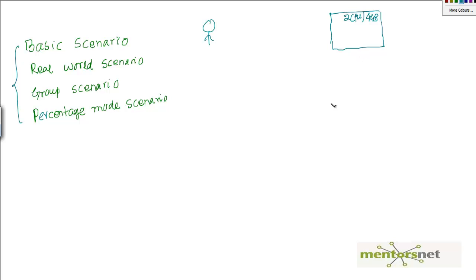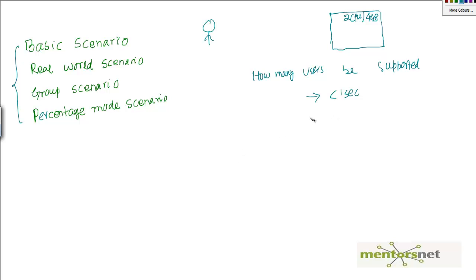With this 2 CPU server, let's say you are asking yourself: how many users can be supported on this server? You have a guideline that whenever users send a request to the website, they should get a response back in less than one second. This is called a Service Level Agreement — you are promising your customers they will get a response in less than one second.